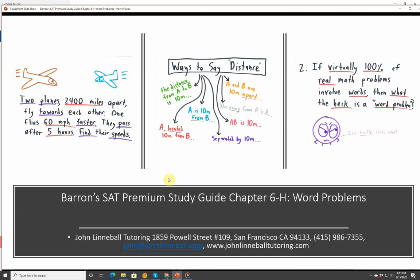Hi, this is John Linnebal from John Linnebal Tutoring, and we're going to cover chapter 6-H of Barron's SAT Premium Study Guide. That's the 30th edition. If you have the 29th or 28th edition, it doesn't really make much of a difference. I wouldn't suggest using anything older than the 28th edition, which I believe is just called Barron's New SAT.